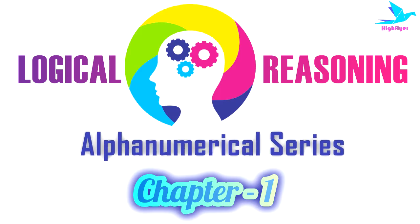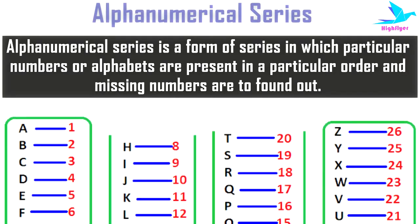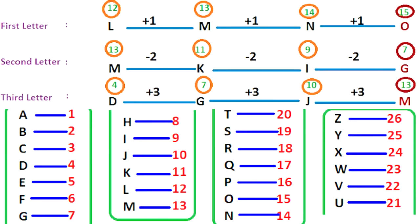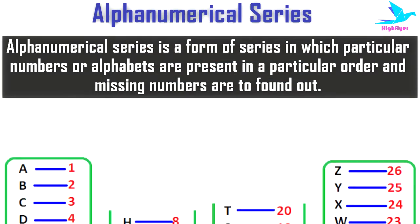Alphanumerical series is our first chapter for logical reasoning. Alphanumerical series is a form of series in which particular numbers or alphabets are present in a particular order, or missing numbers are to be found out. It is all about the logical representation of the sequence of alphabets and numbers in a series, and to understand and clearly define the relation between the numbers and the alphabets in the series.